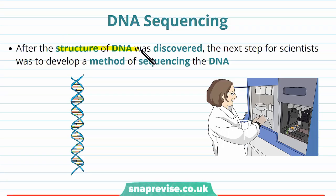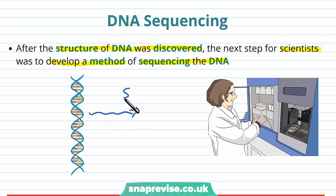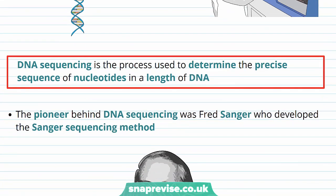Once the structure of DNA was worked out or discovered, the next step for scientists logically was to develop a method of sequencing the DNA. In sequencing the DNA, we understand in the process what the DNA is made up of and what instructions it contains. The process of DNA sequencing is the process used to determine the precise sequence of nucleotides in a length of DNA.